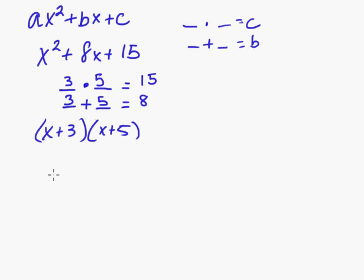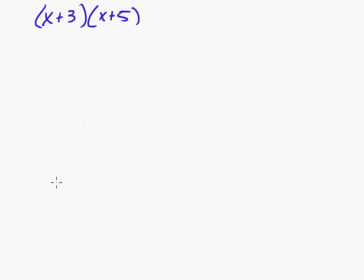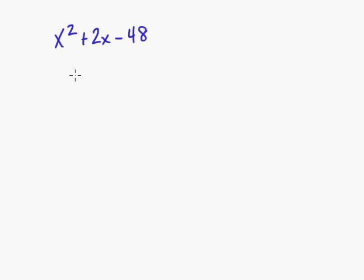Now if it has a negative in it, like x² + 2x - 48, you go what times what equals negative 48. What plus what equals 2.